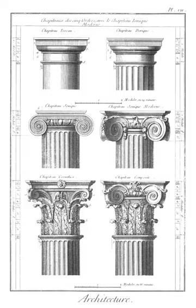Gadrooning: carved or curved moulding used in architecture and interior design as a decorative motif, often consisting of flutes which are inverted and curved. Popular during the Italian Renaissance.